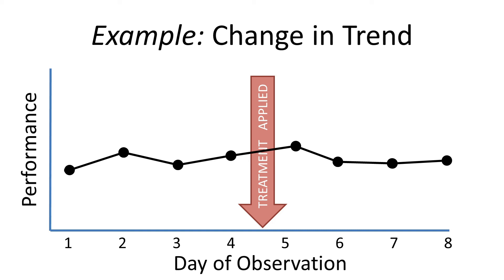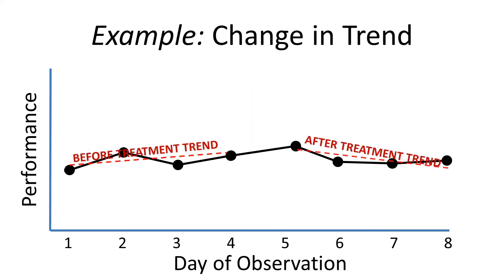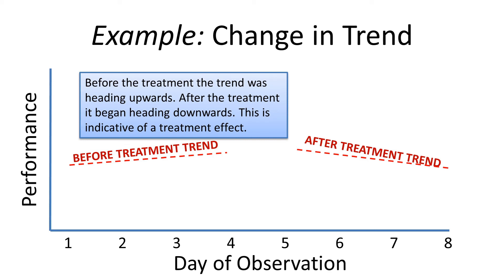The next example shows changes in trend. If you just look at this data it looks like a level — it doesn't really seem like anything's happening. But if you look at the potential trends in the pre-treatment phase and compare them to the post-treatment phase, you'll see it was actually trending upwards before treatment and now it's trending downwards. This change in direction could be indicative of a treatment effect — maybe the treatment isn't having a huge immediate impact, but it is making things better over time.